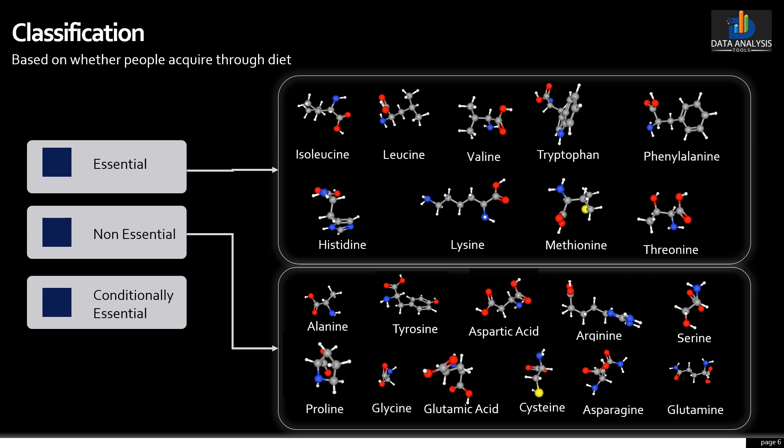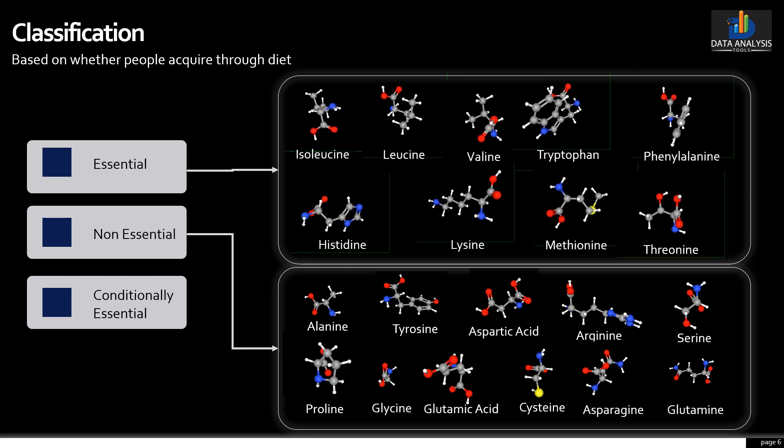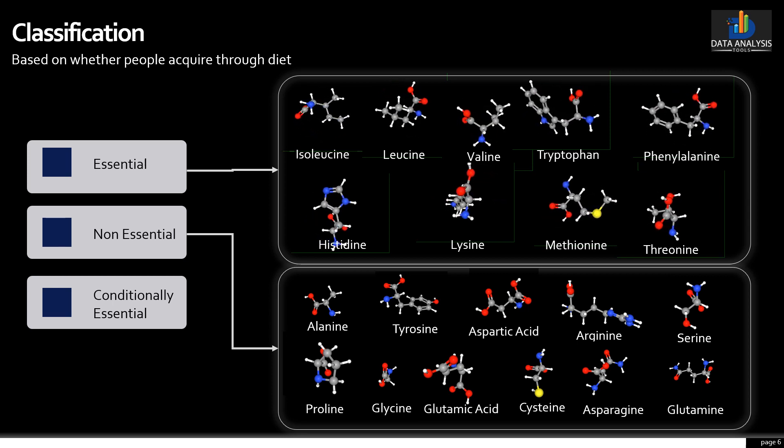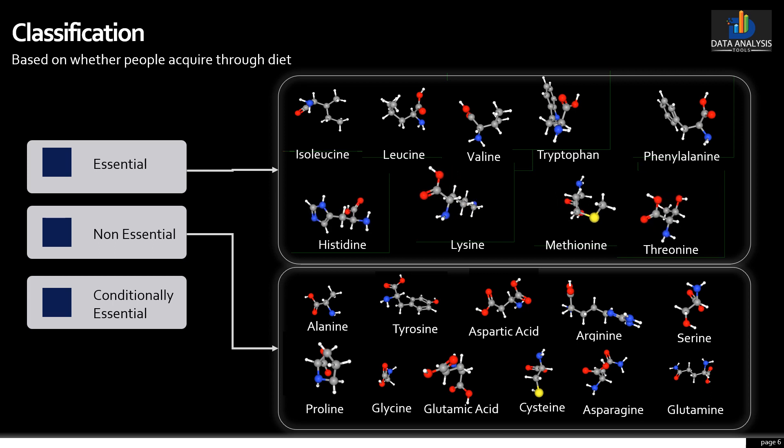Amino acids are classified into three groups based on whether they are synthesized in the body or need to be acquired through our diet: essential amino acids, non-essential amino acids, and conditionally essential amino acids. Essential amino acids cannot be made by the body; they must come from food for protein synthesis to occur. There are nine essential amino acids: histidine, leucine, isoleucine, lysine, methionine, phenylalanine, threonine, tryptophan, and valine. Here are the structures of all these essential amino acids.